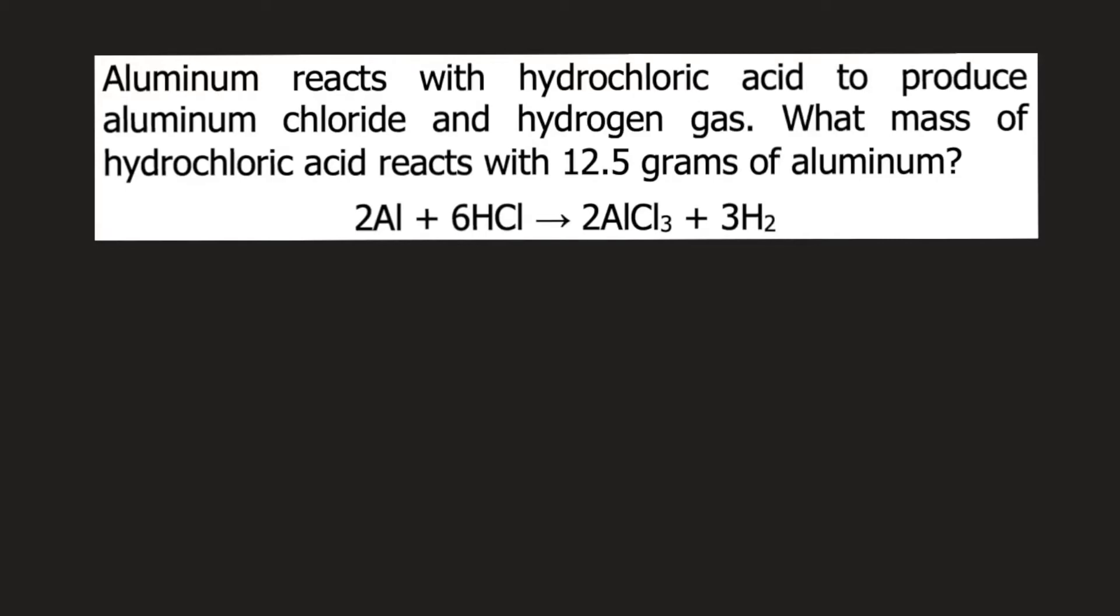Aluminum reacts with hydrochloric acid to produce aluminum chloride and hydrogen gas. What mass of hydrochloric acid reacts with 12.5 grams of aluminum?